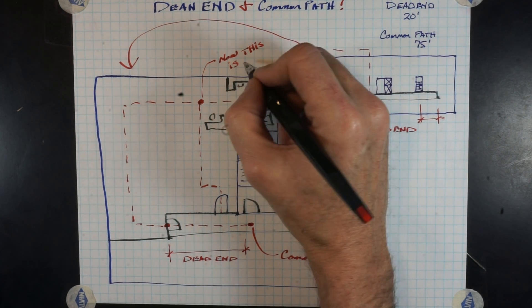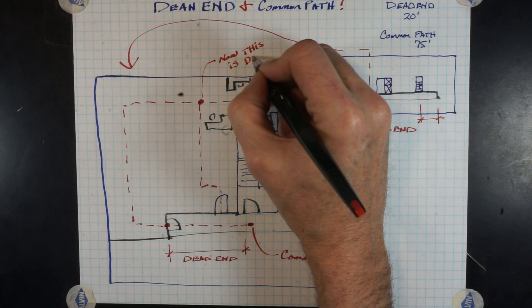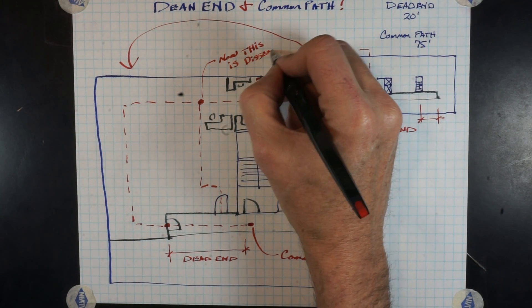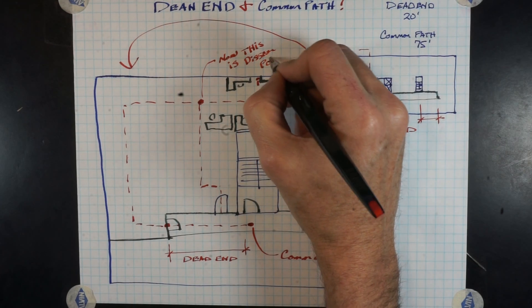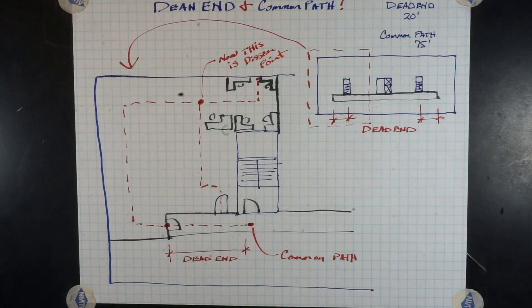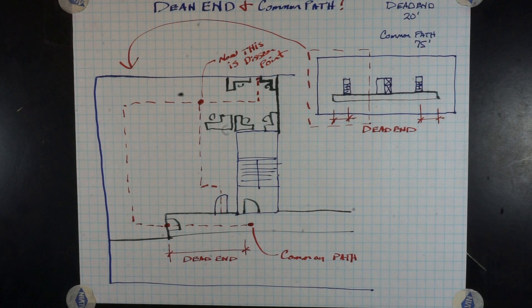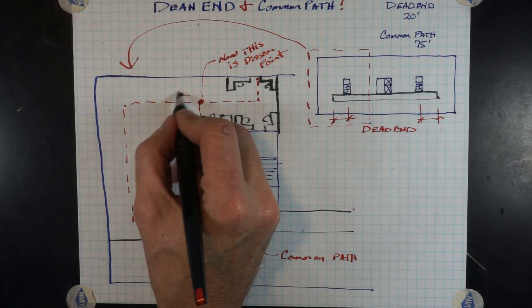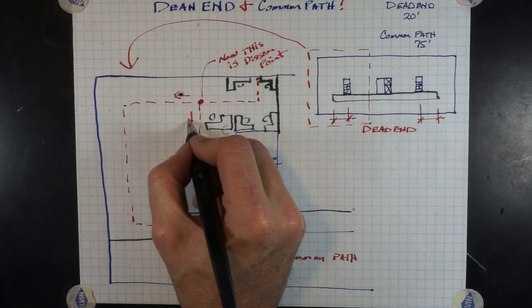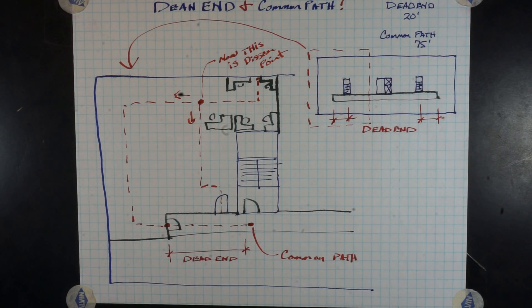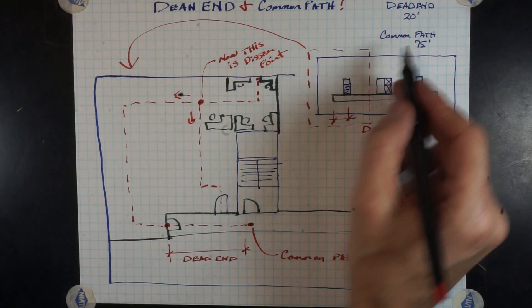And yes, these two doors leading out of the office area into the same corridor potentially would need to be separated by the distance required for a large space. Either one-half for an unsprinkled building or one-third for a sprinkled building.